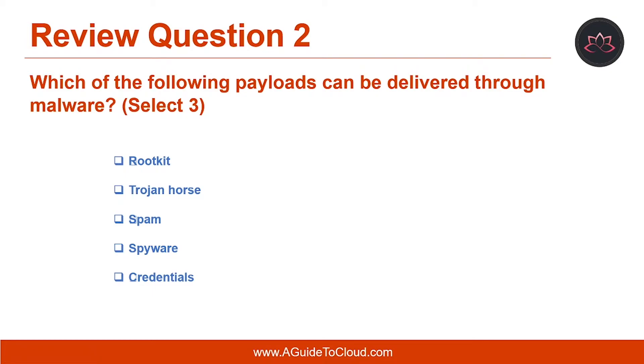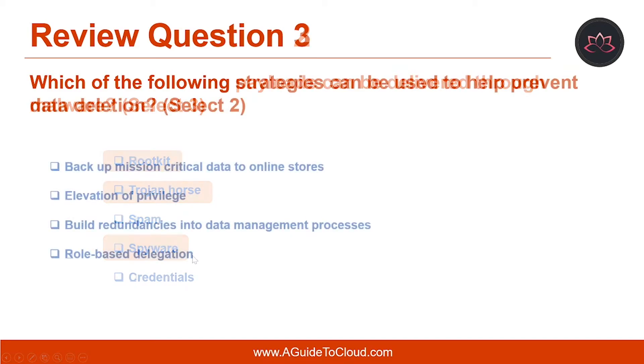Question number two: which of the following payloads can be delivered through malware? The answers are rootkit, Trojan horse, and spyware.